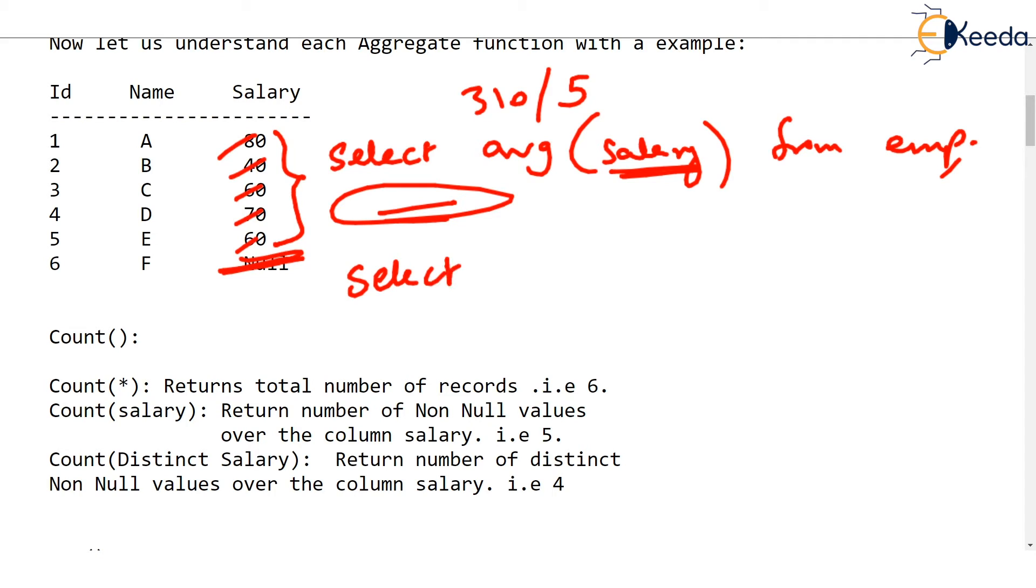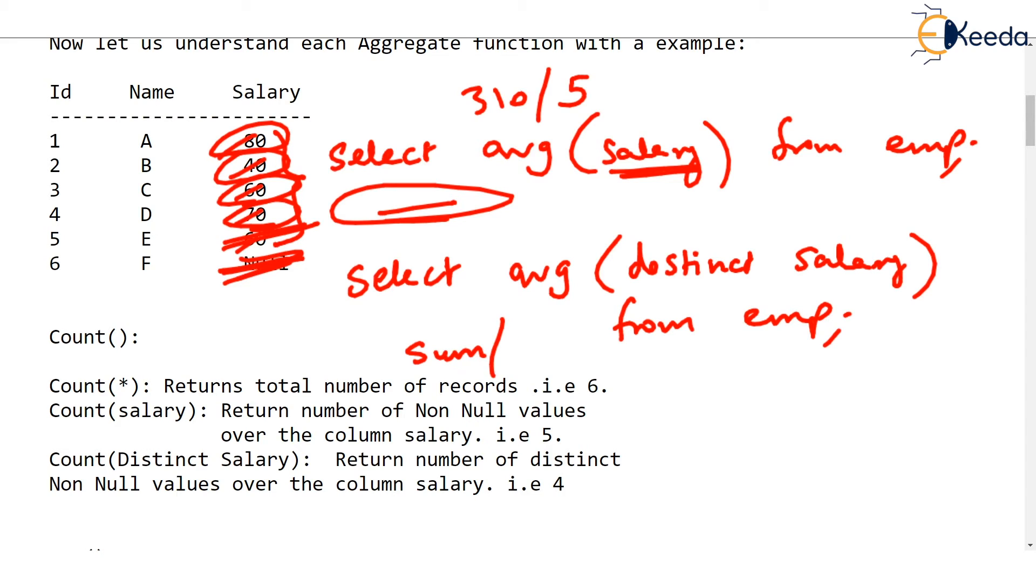Whereas, if you select average distinct salary, let's say we don't want to add 60, which is repeated twice. In that case, 80 plus 40 plus 60 plus 70, this 60 won't be added. Null won't be added. Whatever is the sum will be divided by 4 this time because only 4 salaries were added. 60 was not counted twice. That's how average is found.